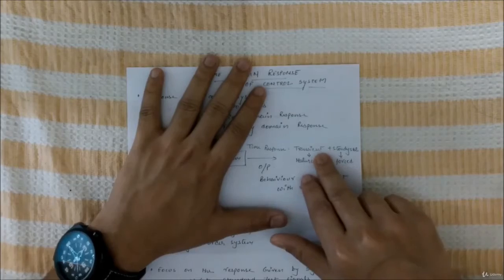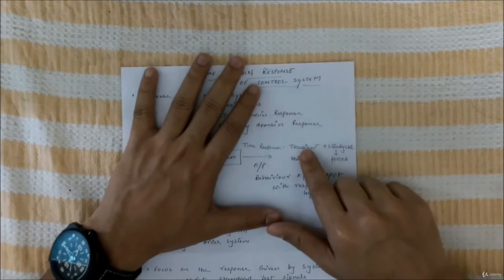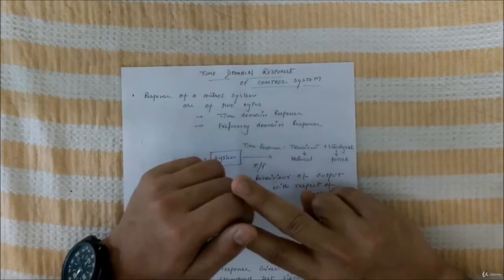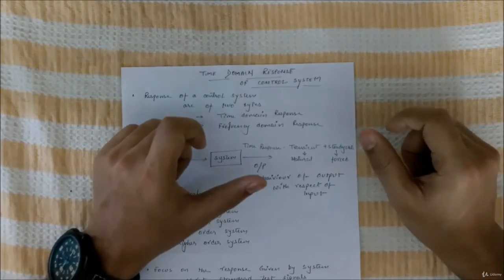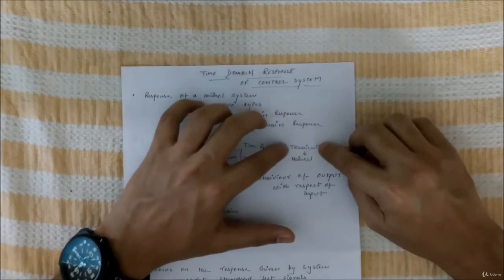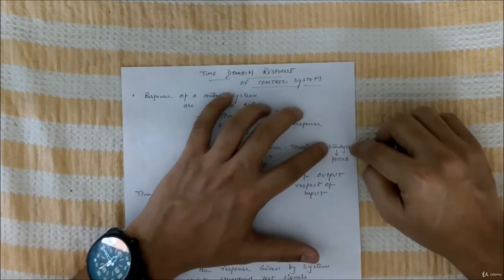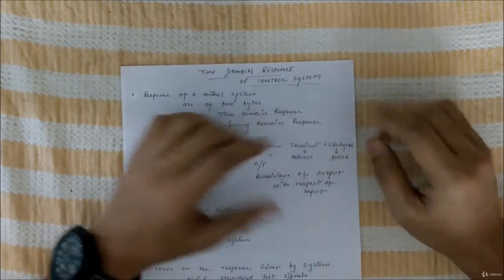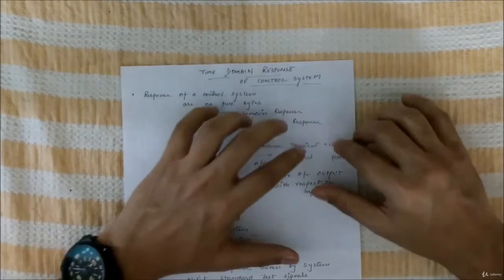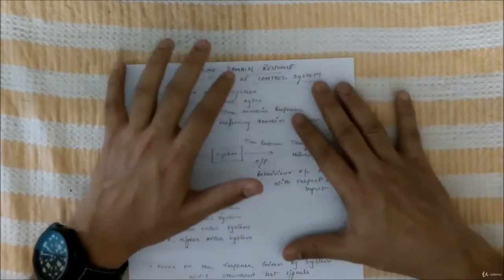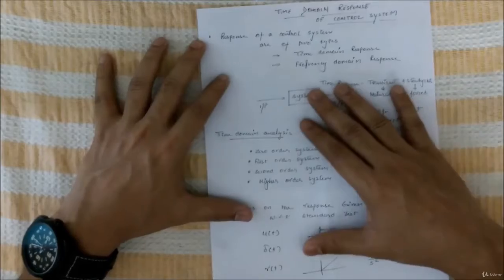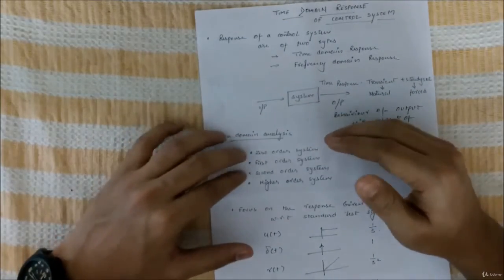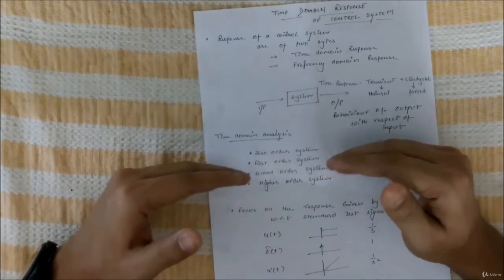Time response is equal to transient plus steady state. It means that time response is a combination of transient plus steady state response, or you can say natural plus forced response. These two things we will be studying in this time domain analysis. Here I've given step by step how we'll proceed.